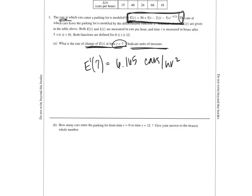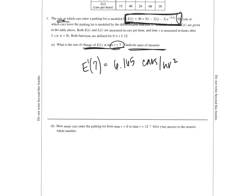In part B, they're asking about how many cars enter the parking lot from time t equals 0 to 12. Well, they gave us the rate that the cars are entering as e of t, and if I integrate a rate, I get a position, or I get a quantity, or an amount. So I'm going to integrate my e of t, and again, I get to use my calculator, from 0 to 12.